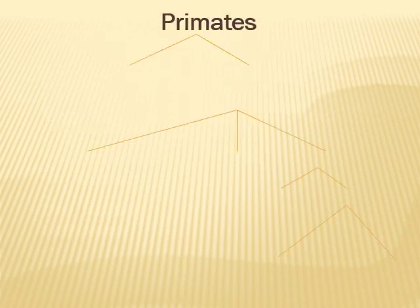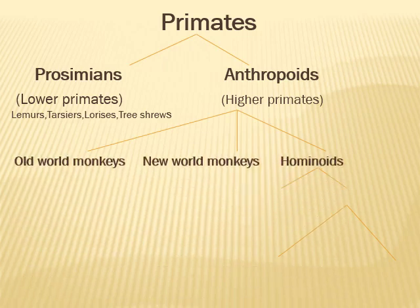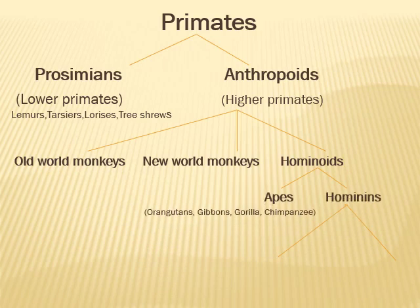Primates diverged into two main lineages: Prosimians, the lower primates, and Anthropoids, the higher primates. Anthropoids further diverged into three main groups: Old World monkeys, New World monkeys, and Hominoids. Hominoids further evolved into apes and hominins, and hominins further evolved into Australopithecus and Homo.